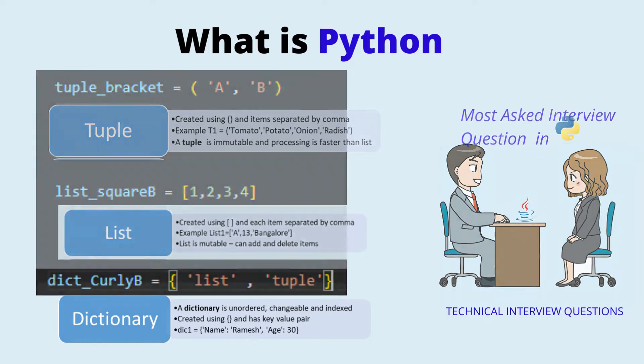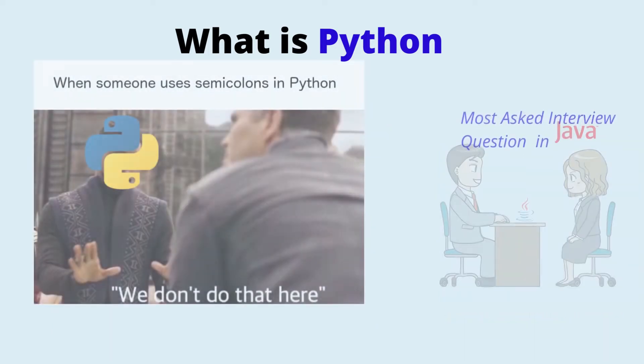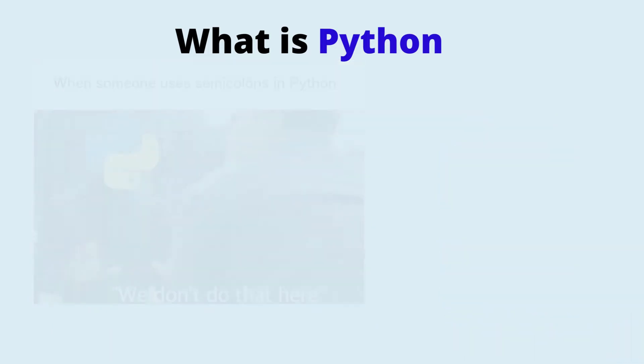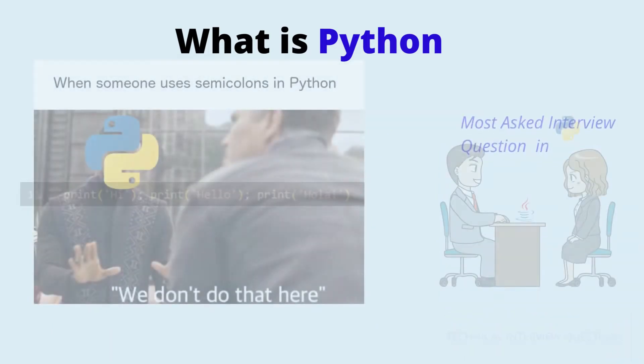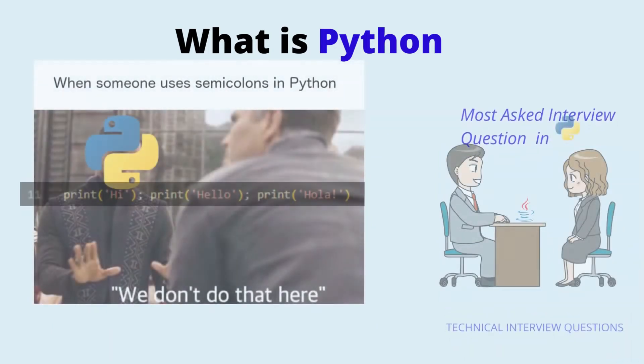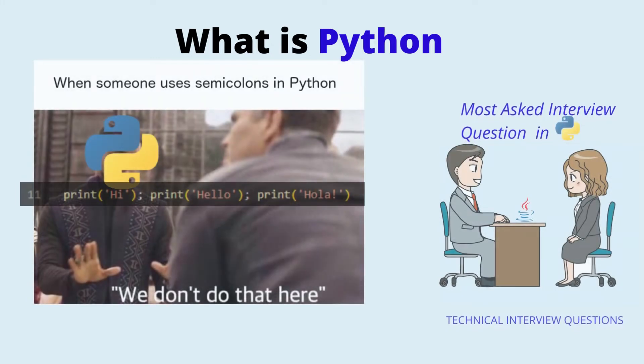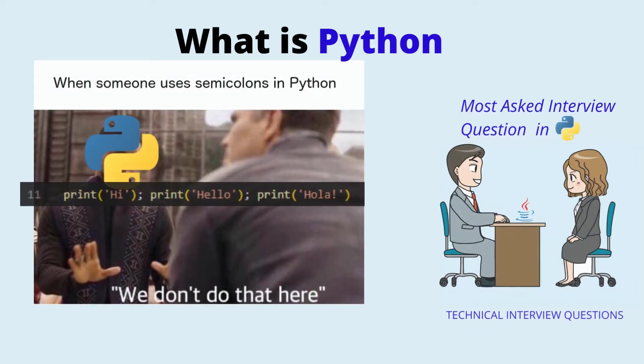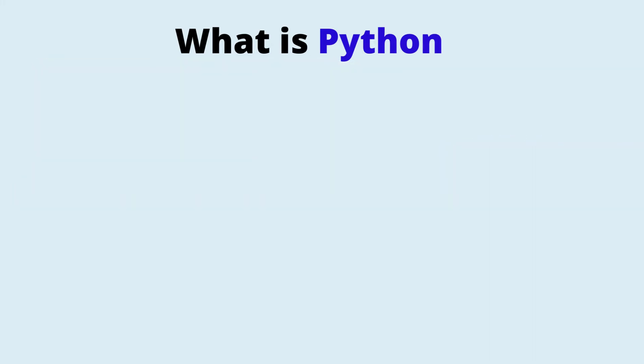A semicolon is not required in this language, but you can use a semicolon to put multiple statements on the same line. You normally don't use semicolons in Python.